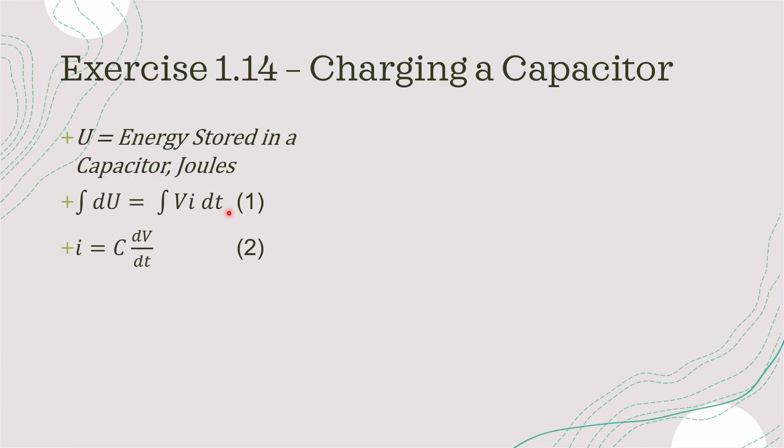Another equation that we know from the electrical theory is the current through a capacitor is equal to the capacitance times the change in voltage over time. So C times dV over dt. If we substitute i of equation 2 into the i of equation 1, we get the following equation.